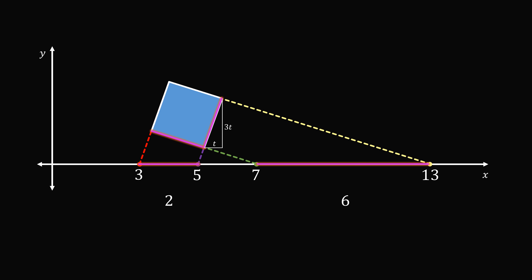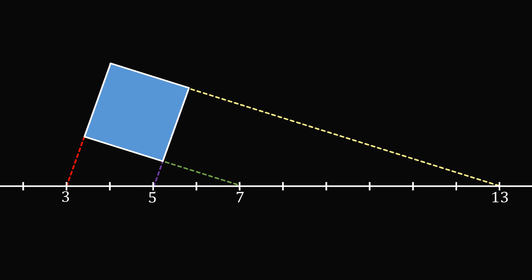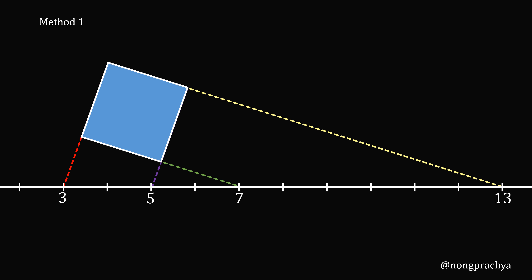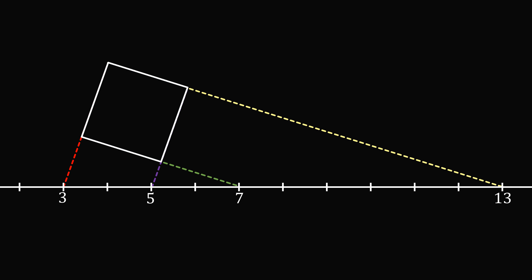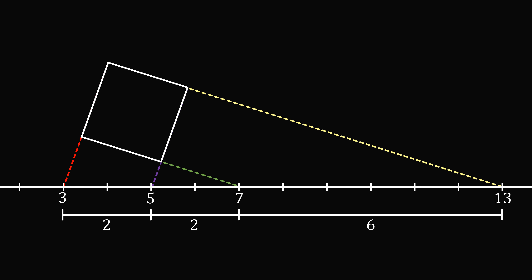Let's prove this rigorously, step by step. Looking at the X axis with tick marks and zooming in on the diagram: the distance between 3 and 5 is equal to 2, the distance from 5 to 7 is equal to 2, and the distance from 7 to 13 is equal to 6. Suppose the side of the square is equal to X, so all sides are equal to X. From the point 7, let's construct a parallel line to the purple line extending from 5, intersecting the yellow line.